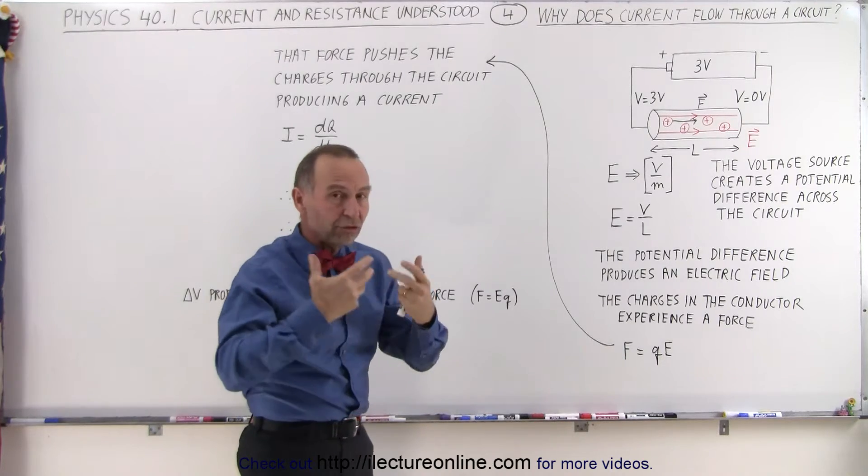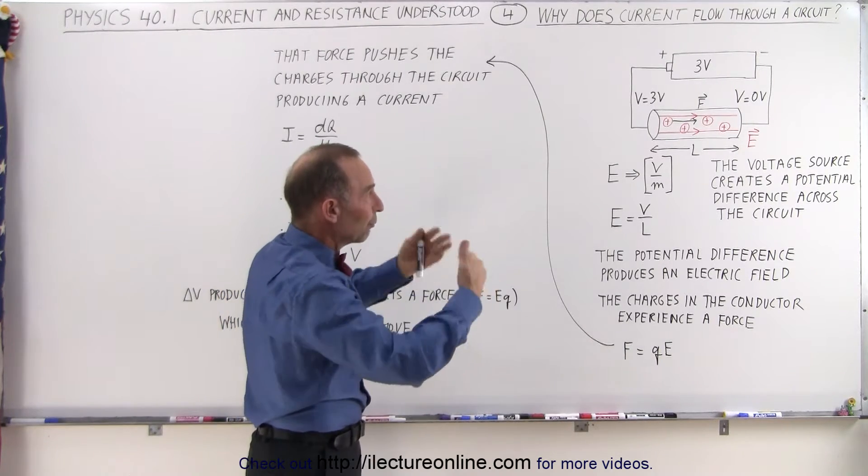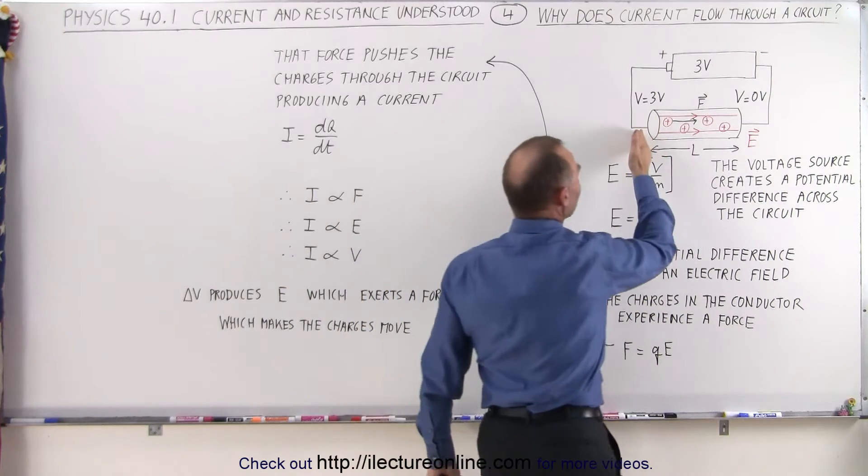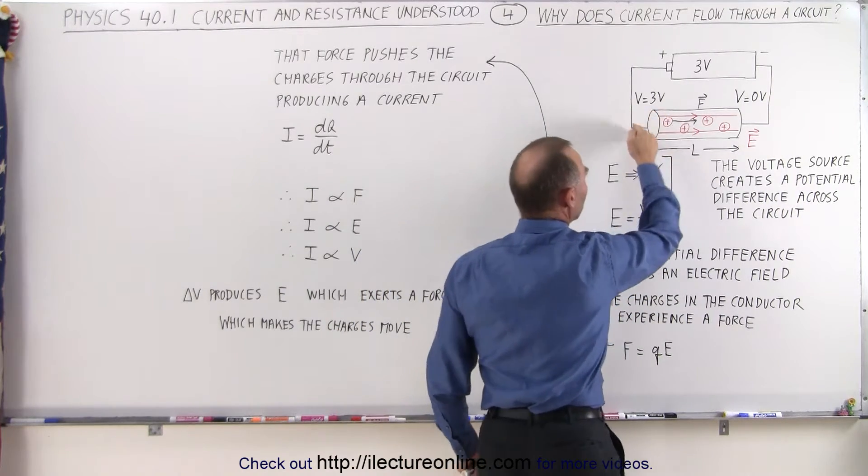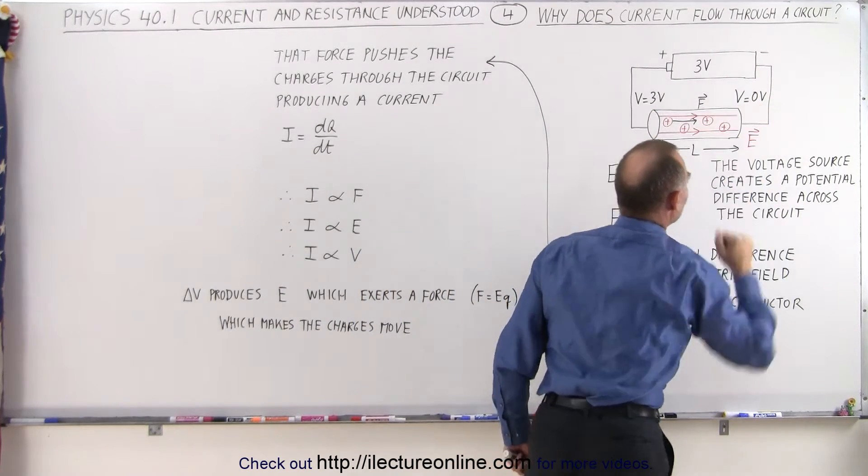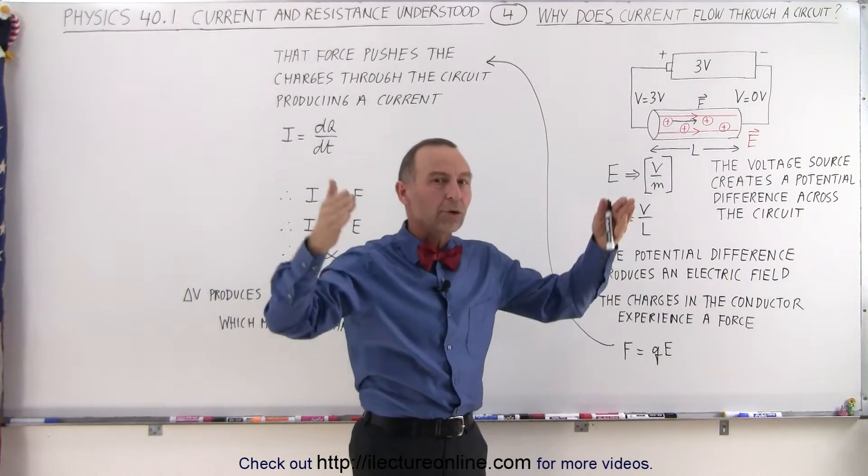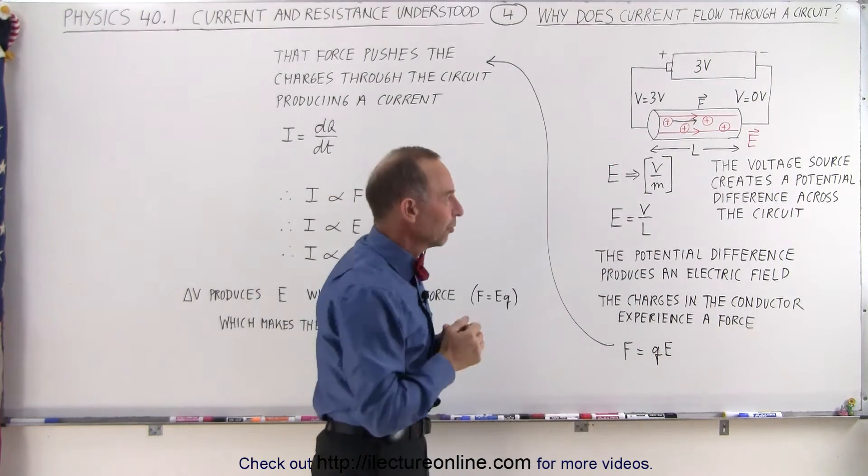If there is a potential difference created by a battery or a voltage source, then on one side of the circuit will have a high potential and on the other side of the circuit will have a low potential. The difference between those two values creates what we call the potential difference.